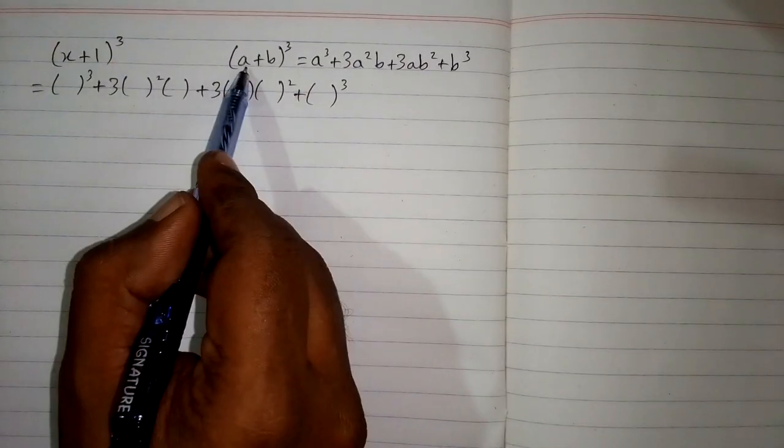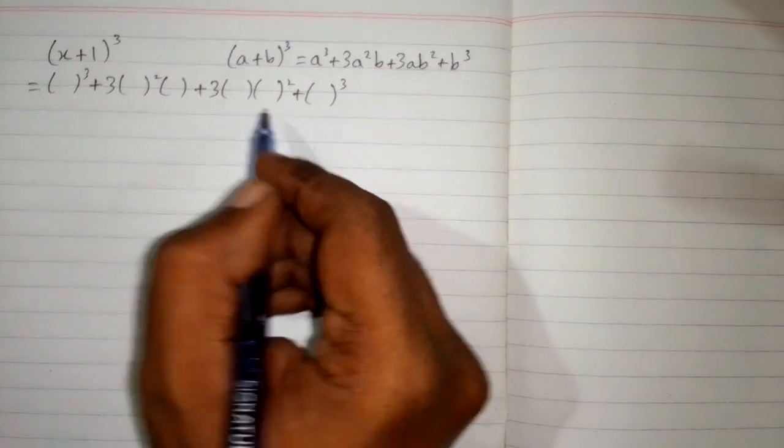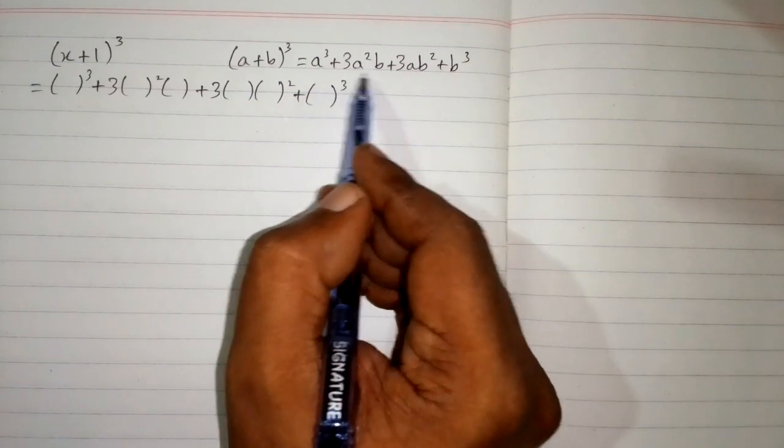Now we can see that we have x in place of a and 1 in place of b. So we will put these values in the respective places of a and b.